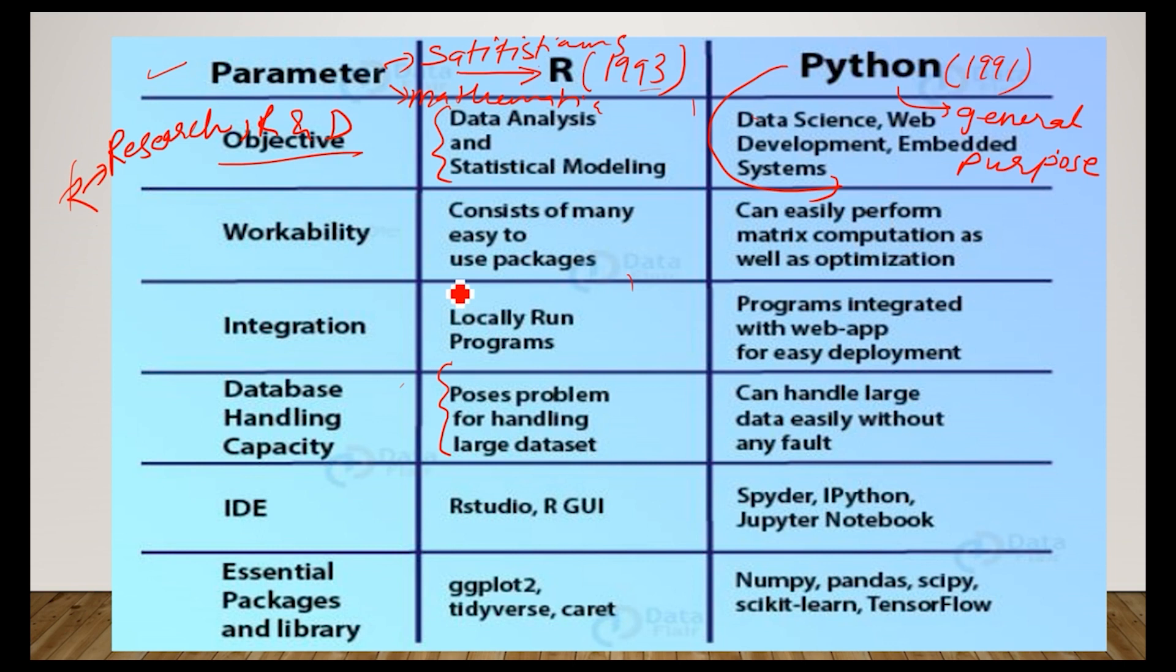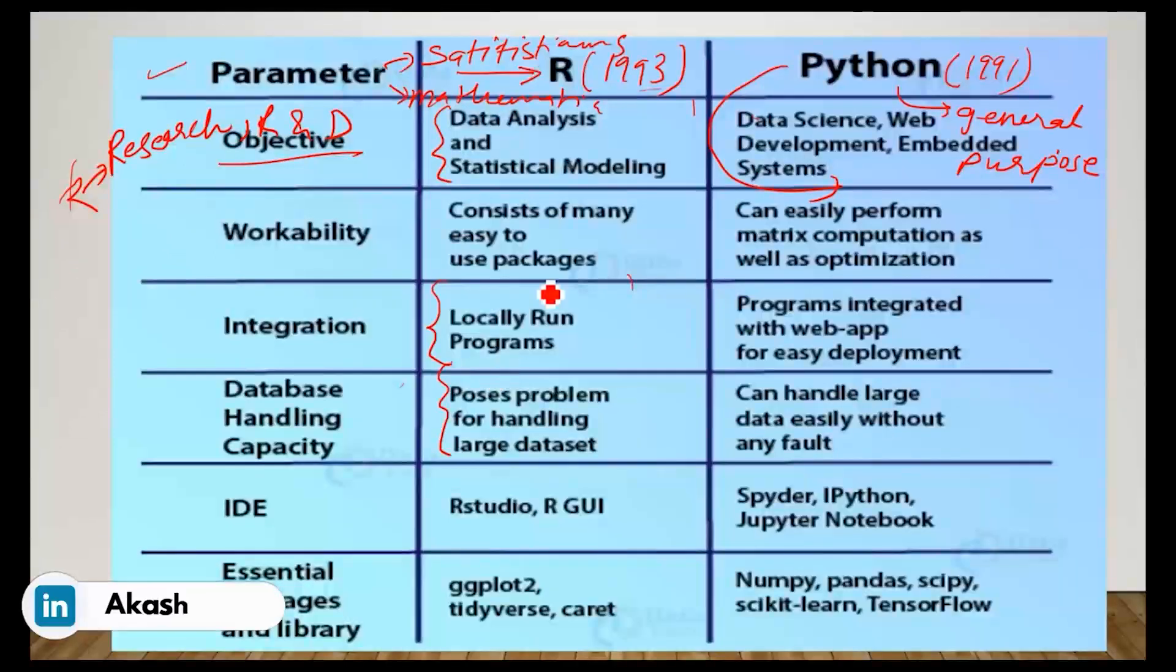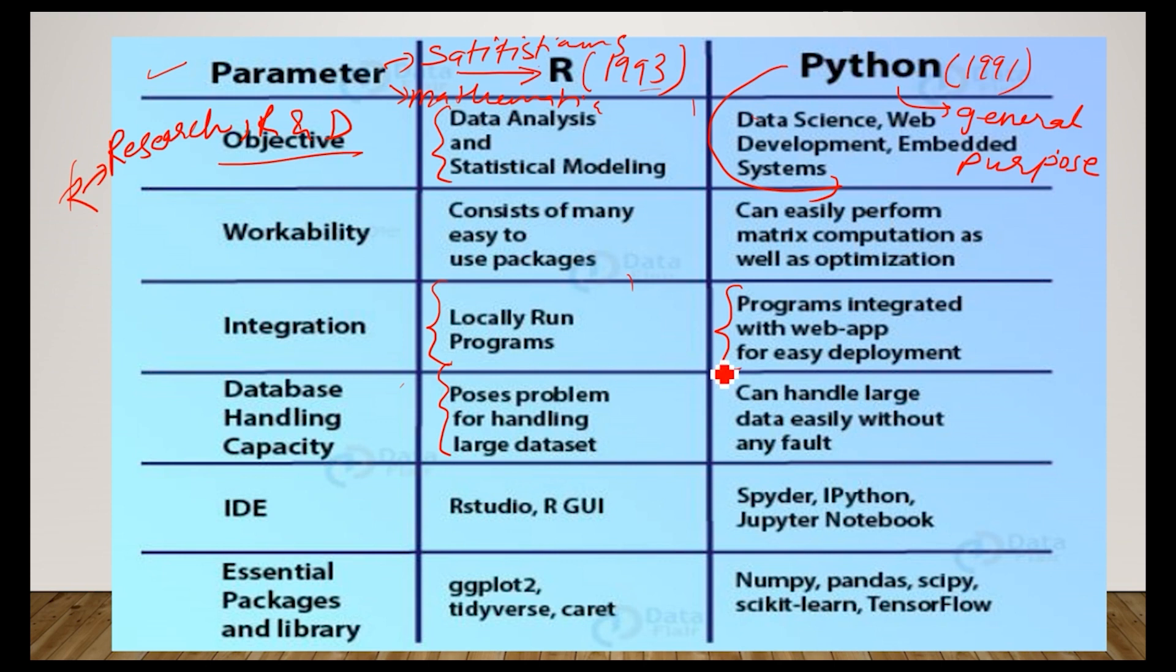One more disadvantage R has is it locally runs programs, while Python can actually make a web app and you can host it on any server. As I said, Python is basically a general purpose programming language and that is why you can use Python for variety of purposes. While R's actual working theory has always been into the research and development field where statisticians and mathematicians actually work with R.